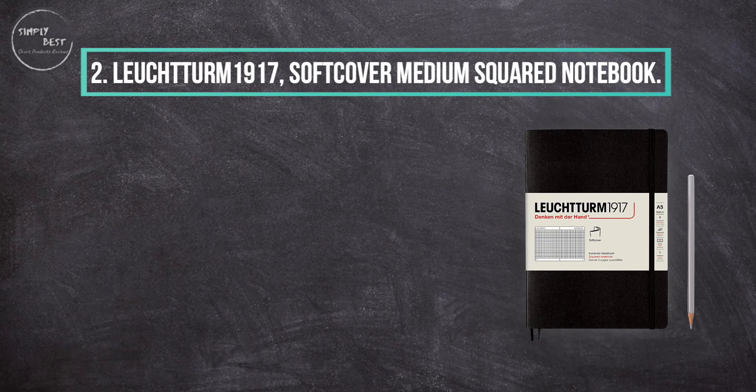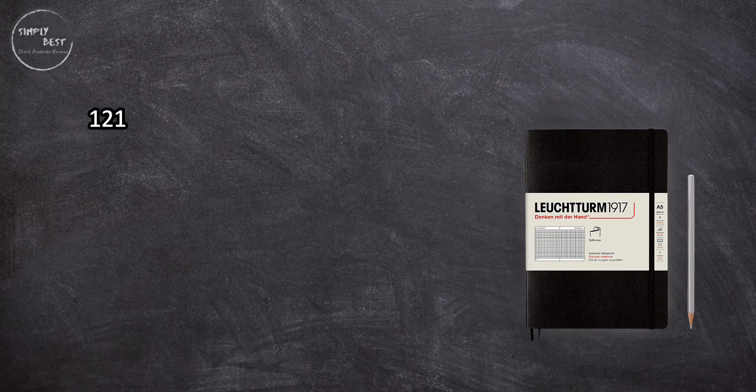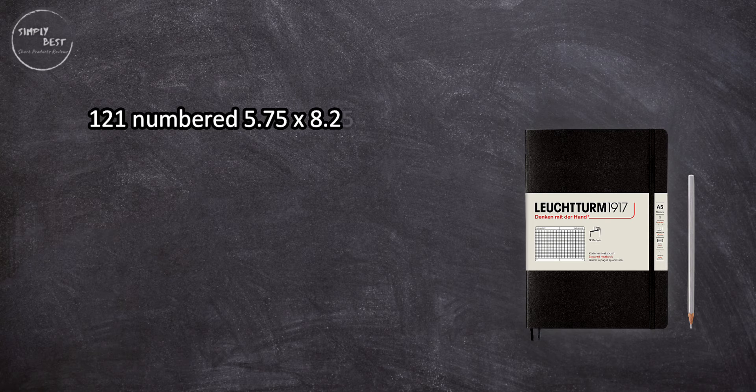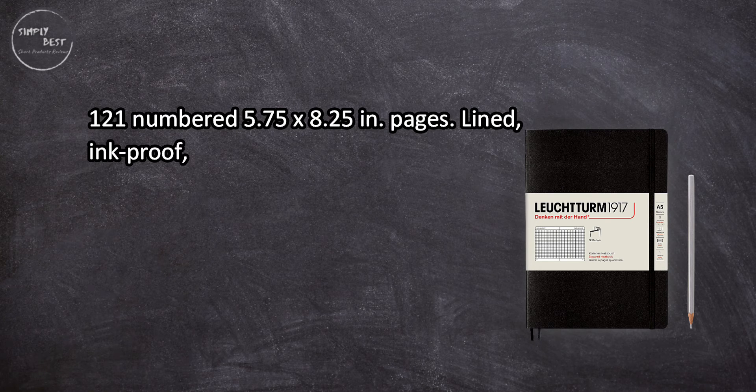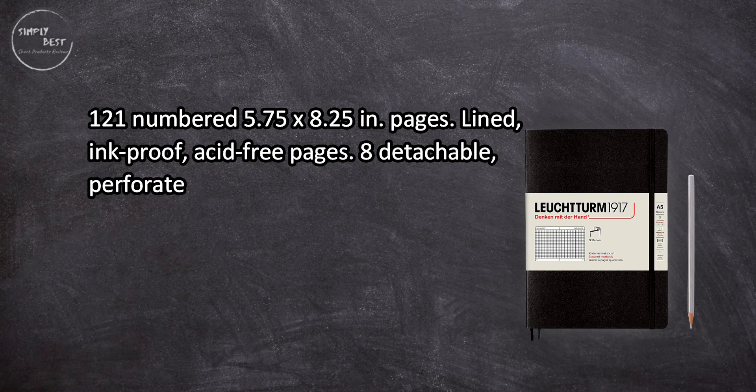At number two, Leuchtturm 1917 softcover medium squared notebook. 121 numbered 5.75 by 8.25 inches pages, lined, ink-proof, acid-free pages.